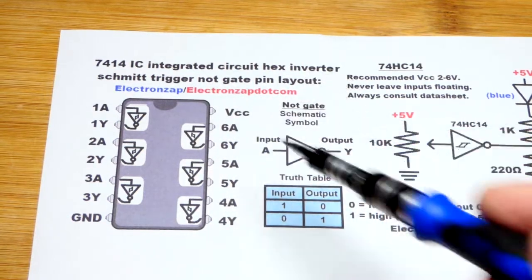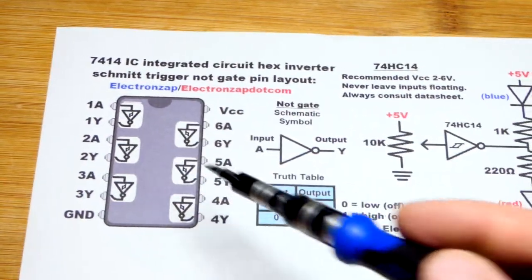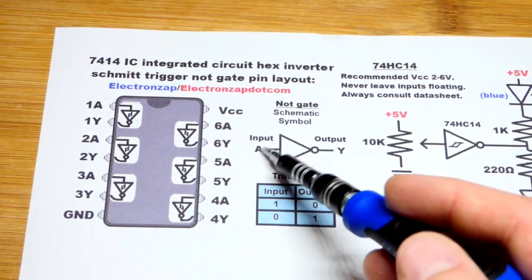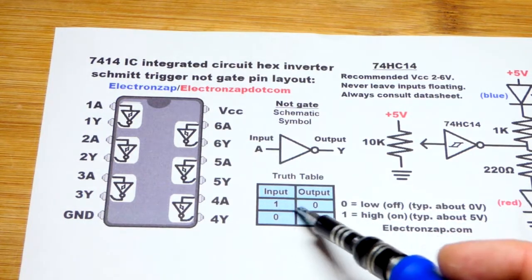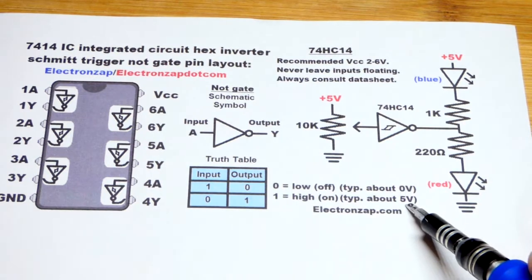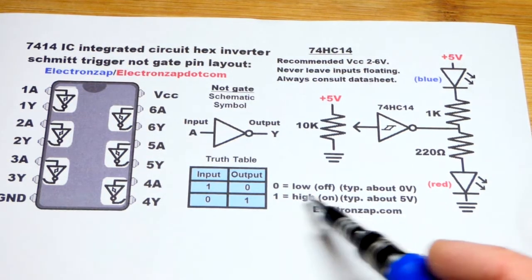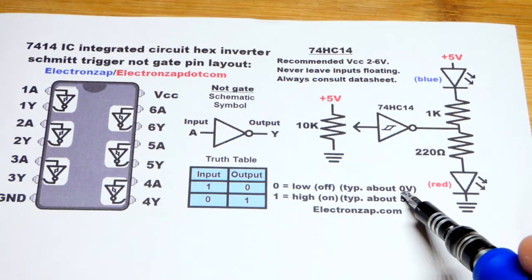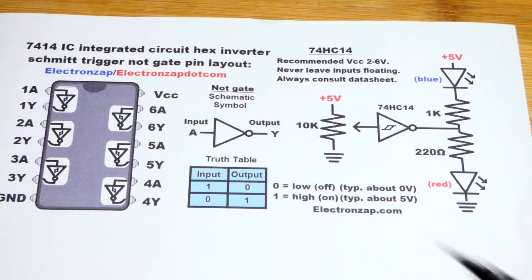They're Schmidt triggers because the input has high and low states - on and off, or zero volts and five volts. Five volts for on, high, or one; zero for off, low, or zero.